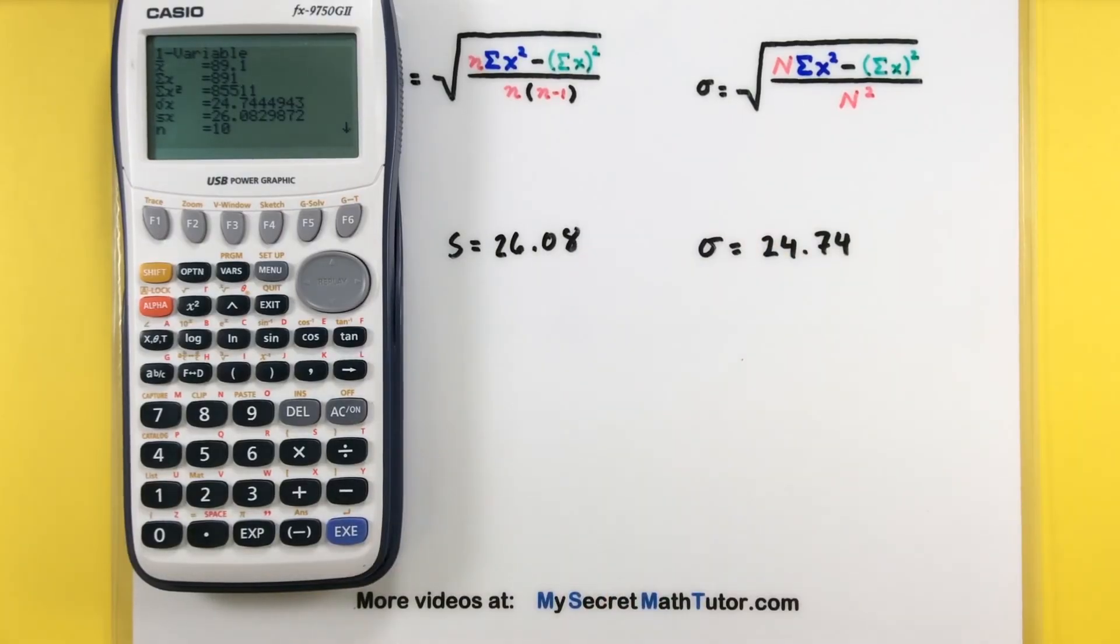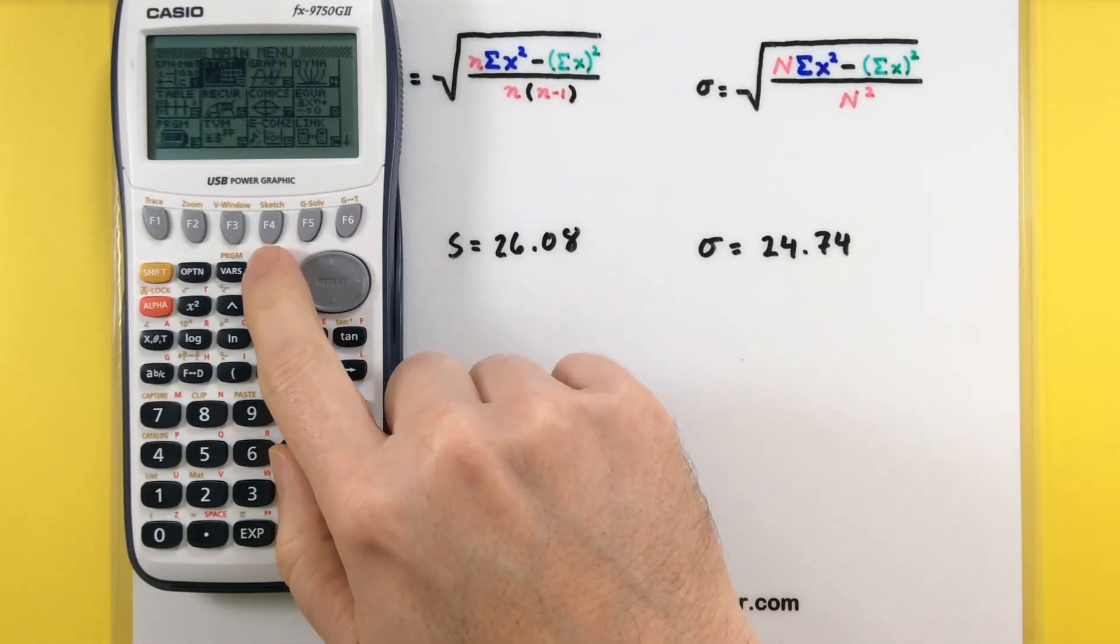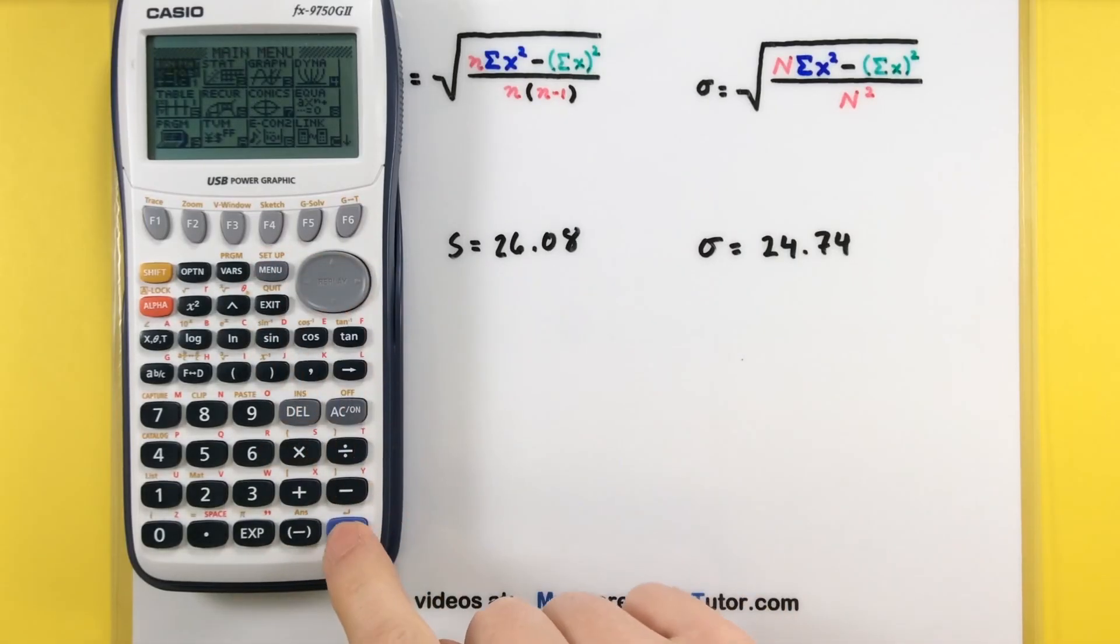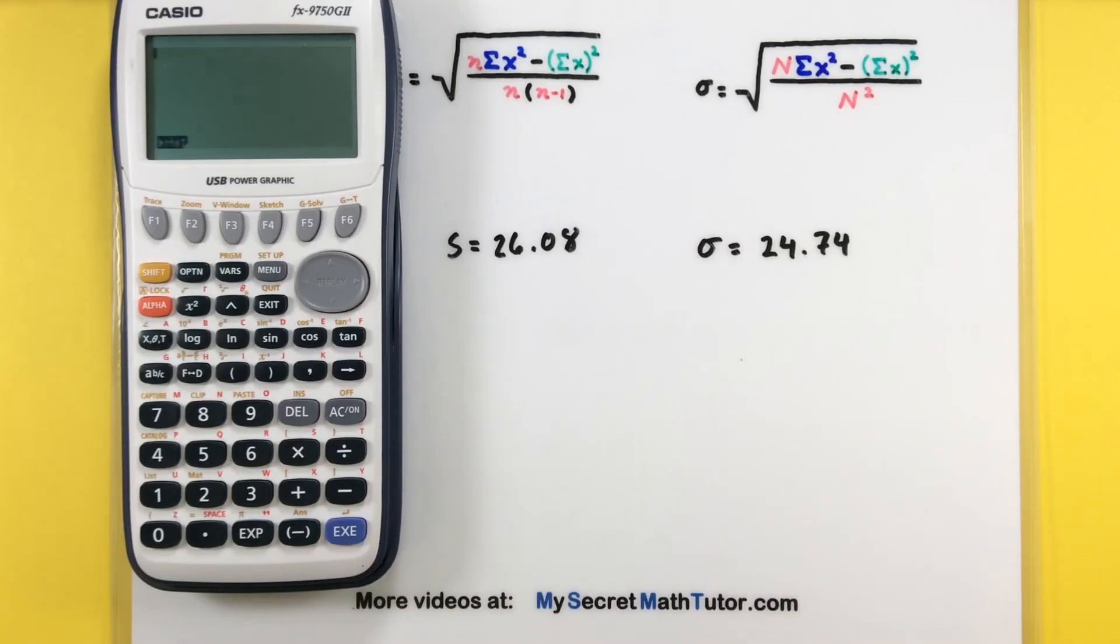There you go—it calculates quickly. To return to your usual calculator mode, press menu and select run, and you're back to normal.